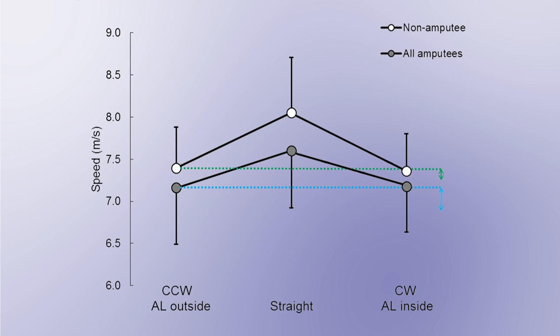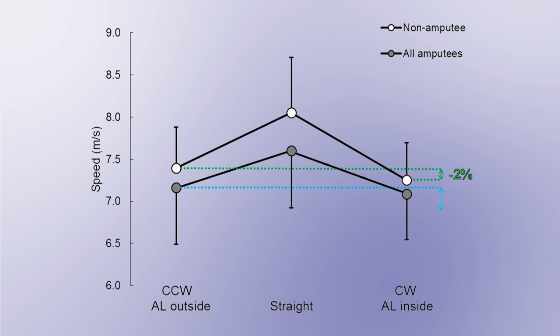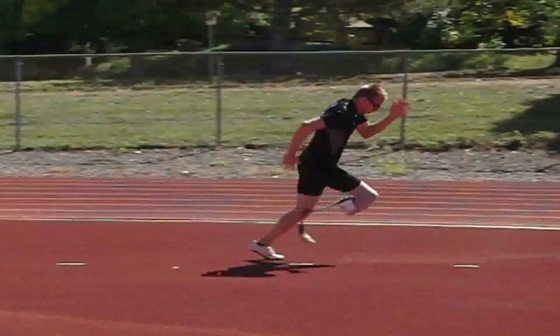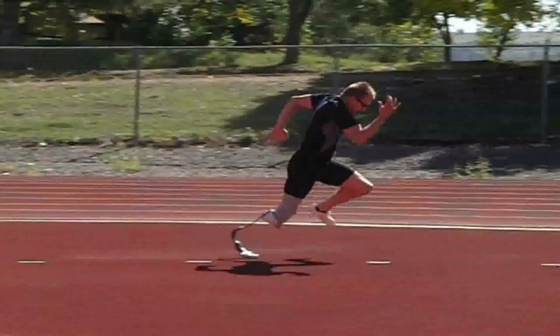Non-amputees ran 2% slower on clockwise compared to counterclockwise curves. Sprinters with an amputation ran 4% slower with their affected leg on the inside compared to the outside of the curve. During curve running, non-amputees and athletes with an amputation had longer contact times with their inside versus their outside leg, suggesting that the inside leg limits curve running performance.